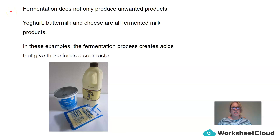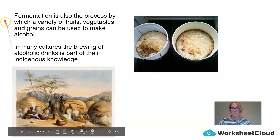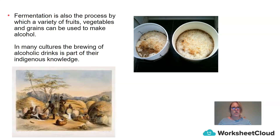Fermentation does not only produce unwanted products. Yoghurt, buttermilk, and cheese are all fermented milk products. In these examples, the fermentation process creates acid, and it is the acid that gives the food the sour taste. Fermentation is also the process by which a variety of fruits, vegetables, and grains are used to make alcohol. And in many cultures, the brewing of alcoholic drinks is part of their indigenous knowledge.